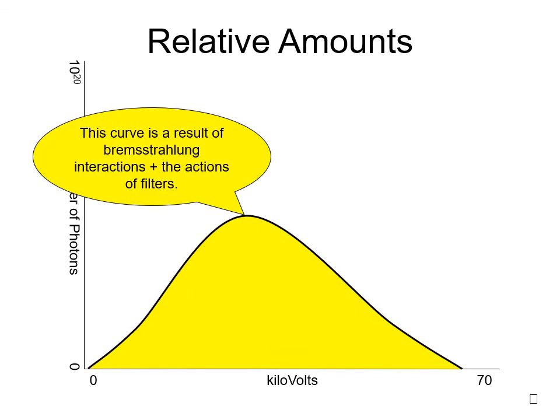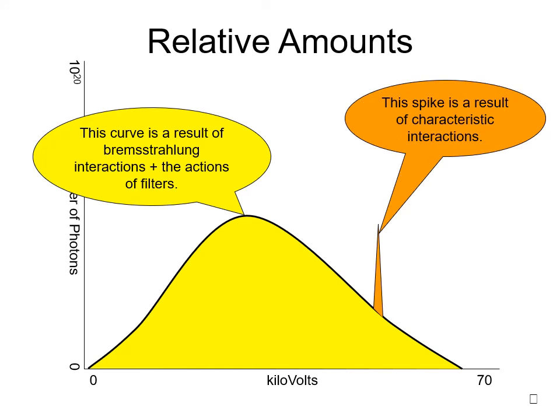The Bremsstrahlung curve produces a wide range of energies and is a product of likelihood of interaction combined with the filtering of the beam as it exits the tube and collimator assemblies. Whereas a small spike of radiation is representative of the characteristic energies produced by a typical tungsten anode X-ray tube.